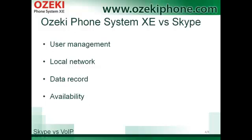When you use your own telephone system in the local network, conversations don't run through the Internet — they stay in the local network. But using Skype, you always have to connect to a remote server. So an own phone system can be faster, more reliable, and secure. In order to ensure a flexible corporate communication system, you have to build your own phone network.